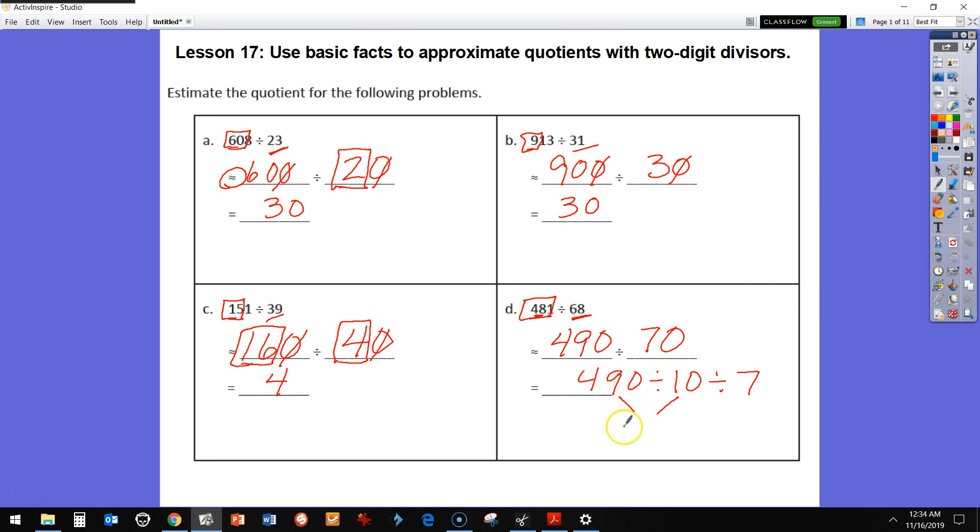And I know that this is equal to 90 and then I know that 490 divided by 10 is equal to 49, and I have 49 divided by seven is equal to seven. So 481 divided by 68 is going to be around approximately seven.